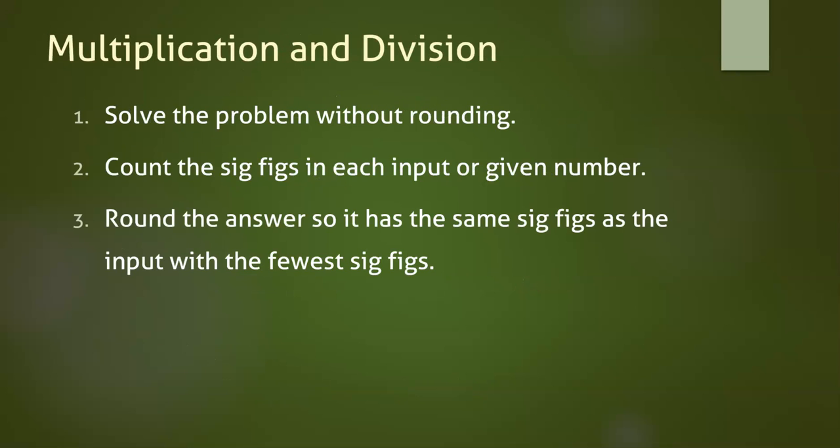To use sig figs, we have slightly different rules for multiplication and division compared to addition and subtraction. All mathematical operations will begin by solving the problem without rounding, typically on a calculator. When multiplying or dividing, you're going to count the number of sig figs in your input values and identify the smallest number of sig figs. Then you'll round your answer so that it has that many sig figs.